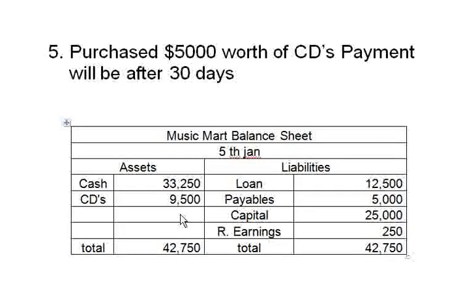On 5th January, cash remains the same because no payment was released. CDs increase by 5,000 — from 4,500 to 9,500 — so the left side increases to 42,750. Since assets increased without a profit, we create a new entry on the liability side called payables. These are short-term obligations — different from long-term loans — and the payables entry is 5,000.